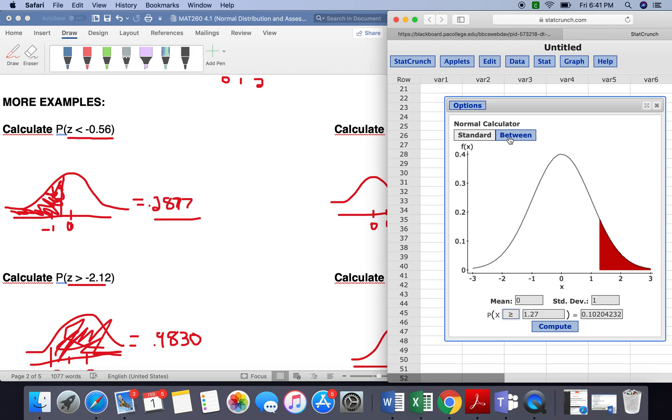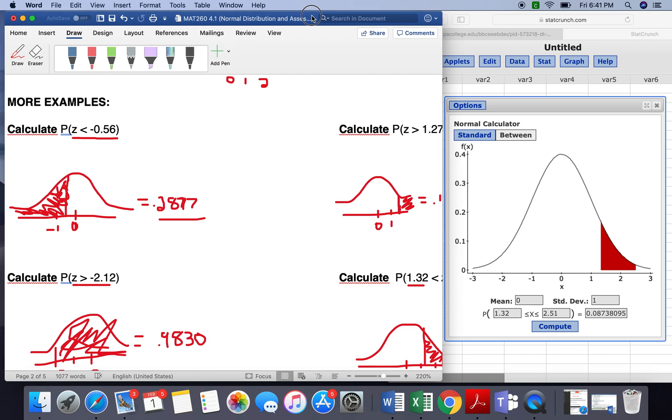And for in between, you're going to click on the between button up here and put in both of your values. And that's how you use StatCrunch to solve these probabilities.